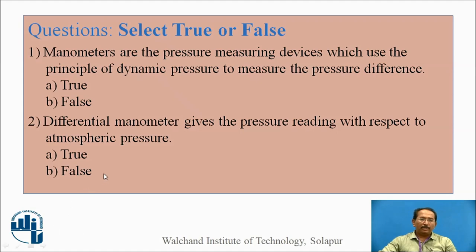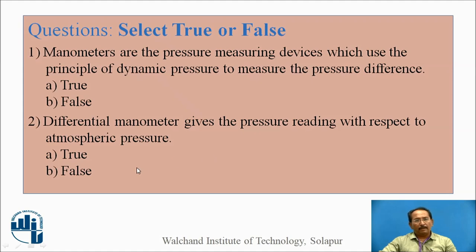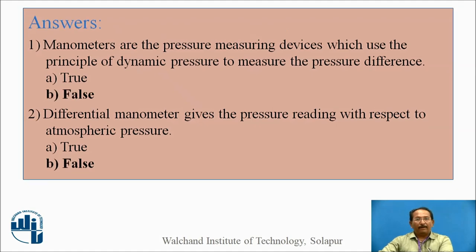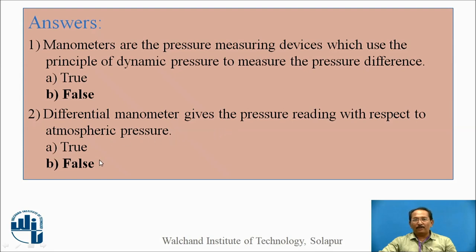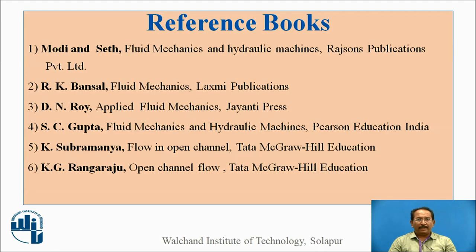Now pause the video and answer the questions. First: manometers are pressure measuring devices which use the principle of dynamic pressure to measure the pressure difference — true or false? Second: a differential manometer gives the pressure reading with respect to atmospheric pressure — true or false? Both are false. Manometers do not use the principle of dynamic pressure, and a differential manometer does not give readings with respect to atmospheric pressure. So, some more problems will follow with this reference.